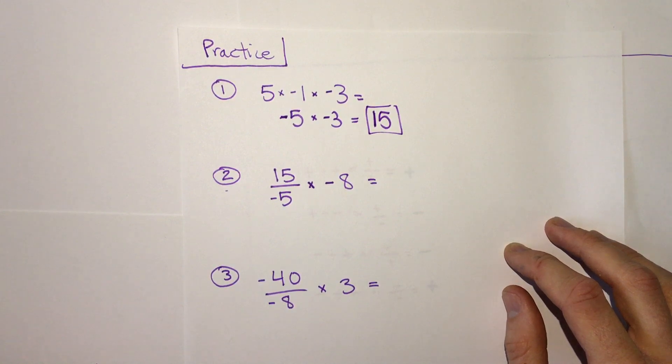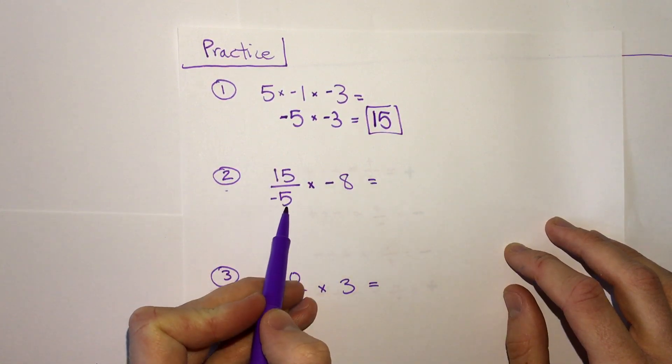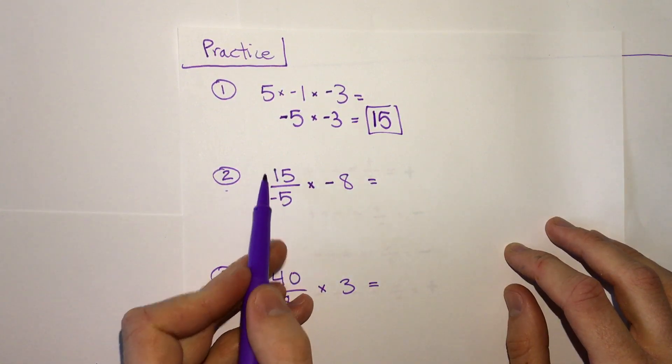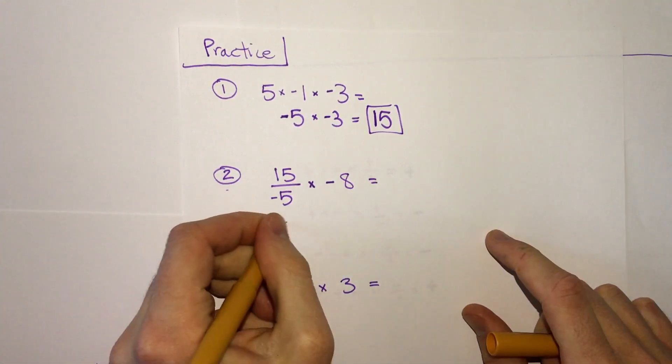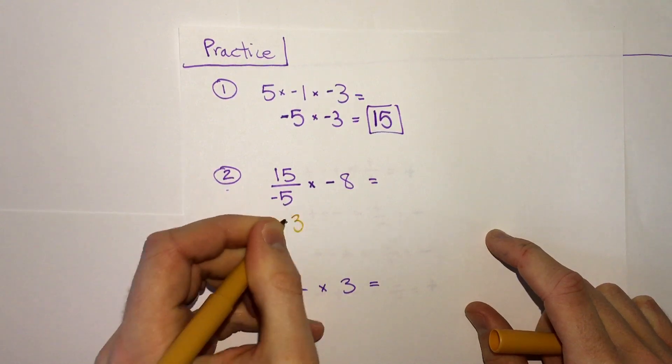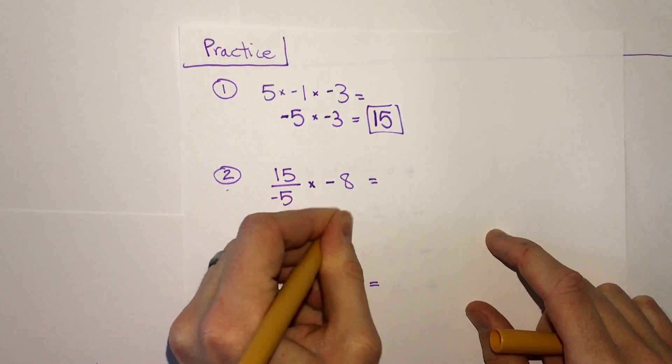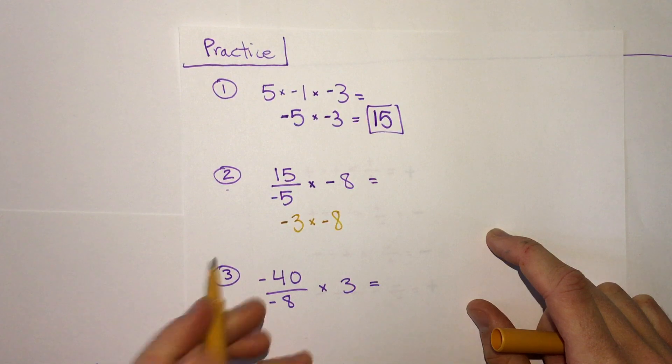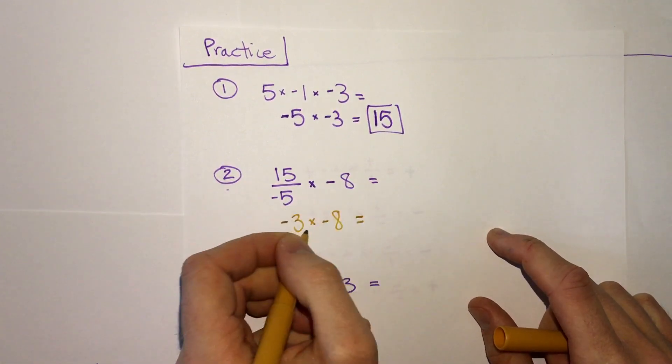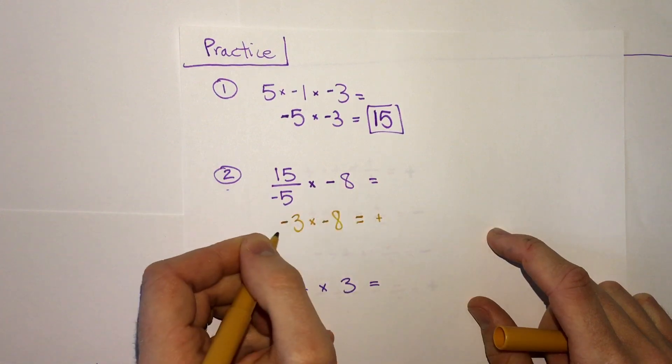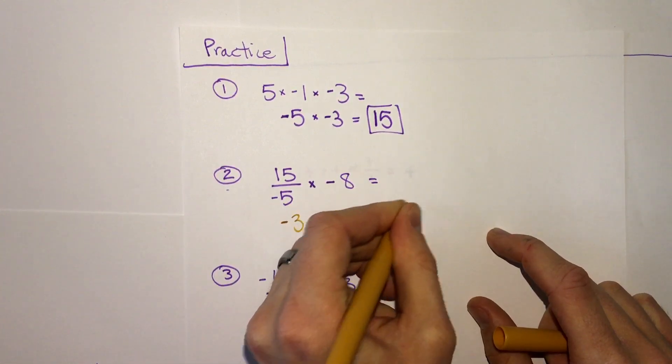The second one, we have some division, 15 divided by negative 5. Positive divided by a negative is going to be negative, and 15 divided by 5 is 3. So negative 3 times negative 8, negative times a negative is positive, and 3 times 8 is 24. So we get positive 24.